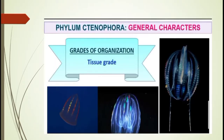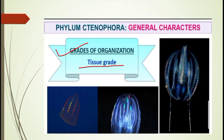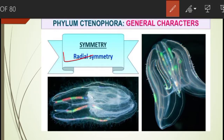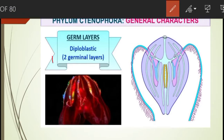Now let us study some general features of Phylum Ctenophora. The first feature is grade of organization — tissues are found in the body of ctenophores, so they show tissue level of organization. They have radial symmetry; the arrangement of comb plates gives the appearance of radial symmetry. They have two germ layers, ectoderm and endoderm, so the organisms are diploblastic.